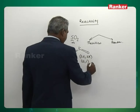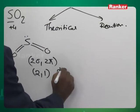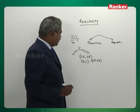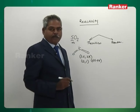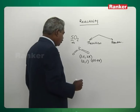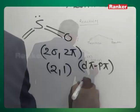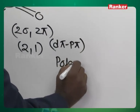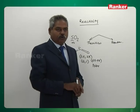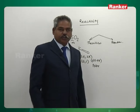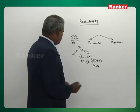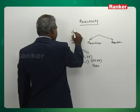And one of the pi bonds is indeed a d-pi p-pi bond — a pi bond in which the d orbital of sulfur is involved. And since you have a lone pair, wherever there is a lone pair, the molecule is said to be polar. So these are all theoretical aspects. And one more: sulfur dioxide is diamagnetic.